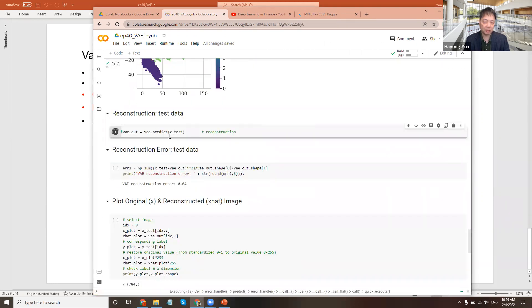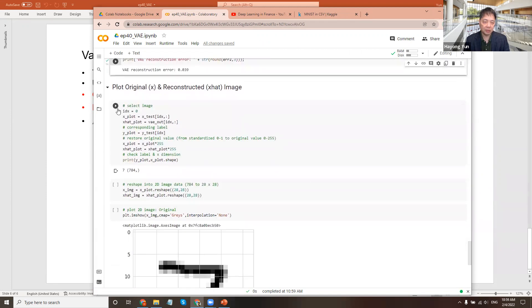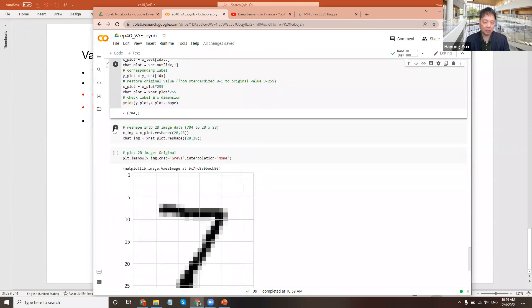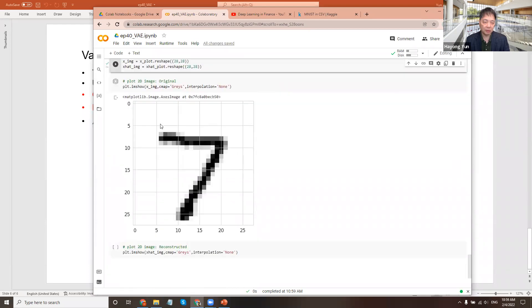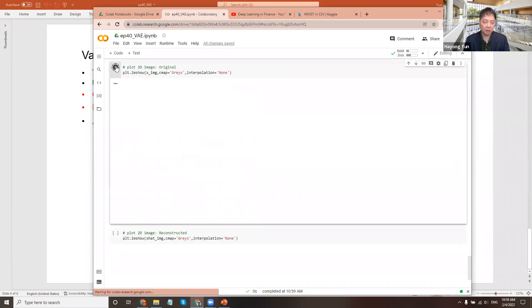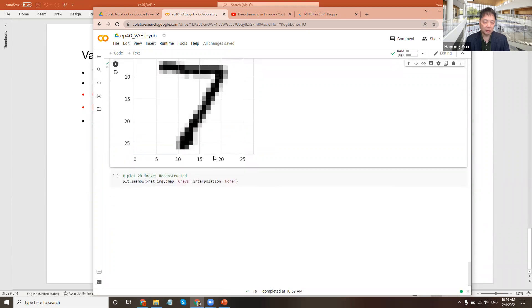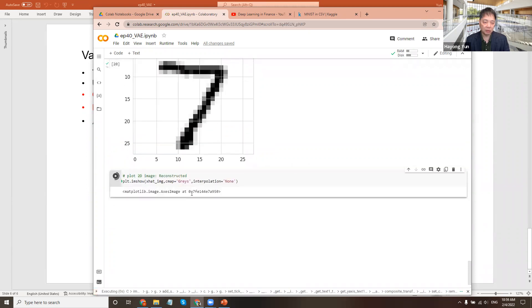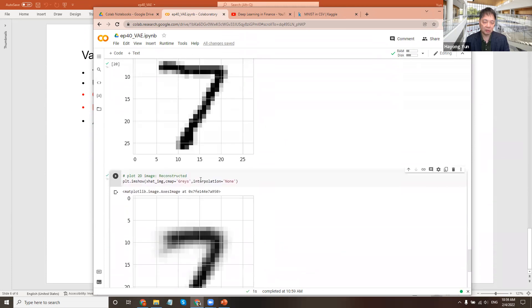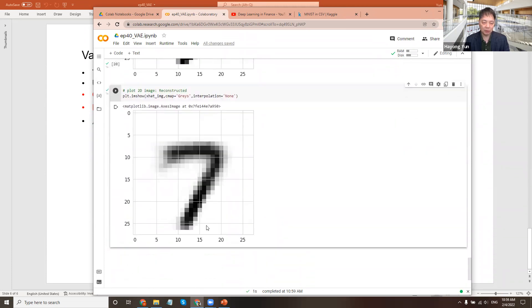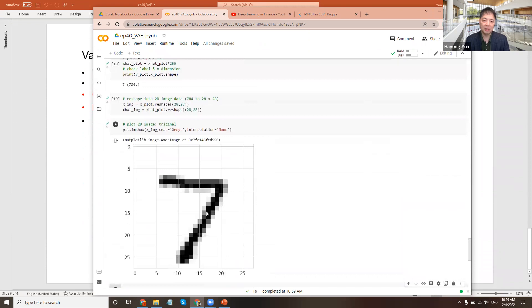How about the reconstruction data? The VAE output and compare the mean square error here. Let's select an image how it performed. Let's say the first one, which is a seven, and reshape the image. The original image is here and the reconstructed image is here. So again, not quite as good as the original one, but it does a decent job.